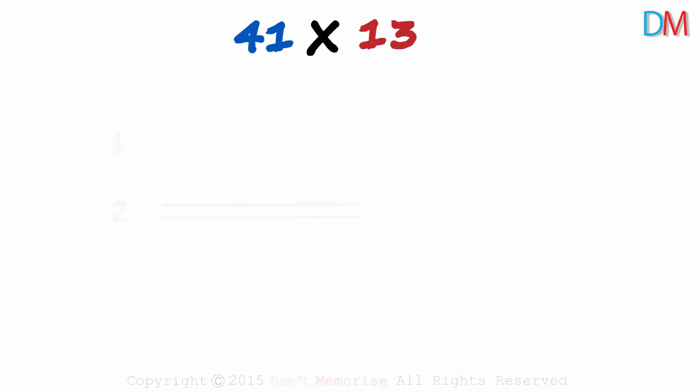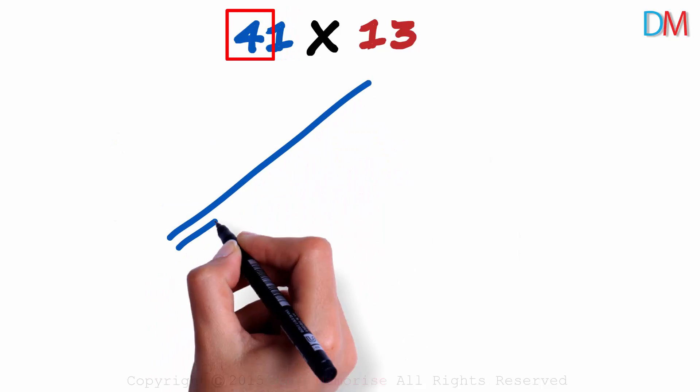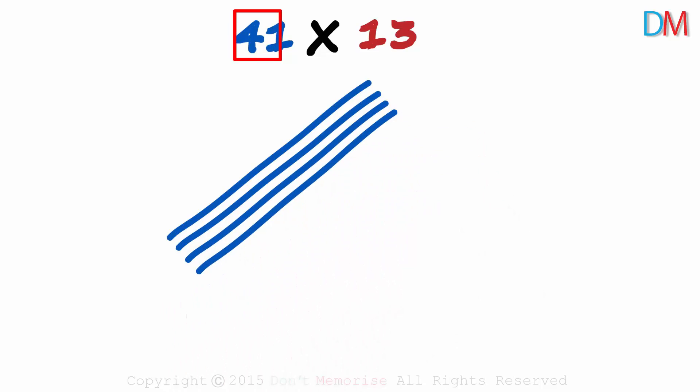The first digit of the number 41 is 4, so we draw four lines. And for the second digit 1, we draw one line after leaving some space.